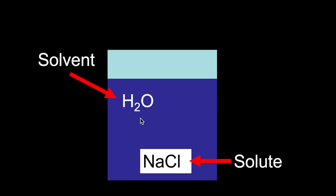Looking at my diagram here: this is a salt cube, and I have a container of water. Water is my solvent, sodium chloride is my solute, and once all of it dissolves, the whole thing becomes a salt solution.